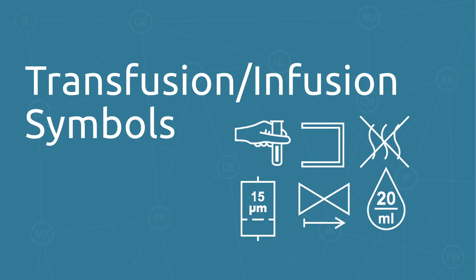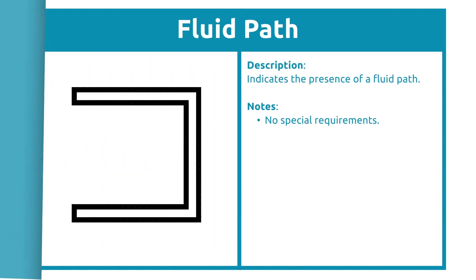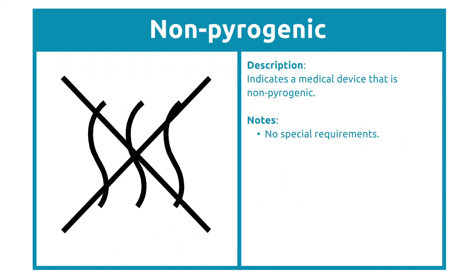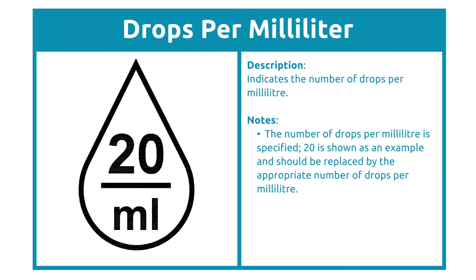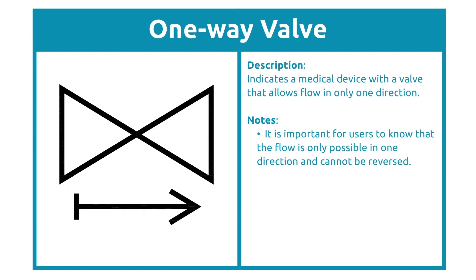Transfusion and infusion symbols are used on devices involved in transporting fluids from one place to another. The sampling site symbol communicates devices used in collecting and/or storing blood samples. The fluid path symbol identifies the flow path of fluids and can be used with other symbols to communicate more meaningful information, such as nonpyrogenic fluid path. The nonpyrogenic symbol informs that the device will not cause inflammation or induce a fever. The drops per milliliter symbol provides information on drop distribution — for example, 20 drops per milliliter, or 50 if the device distributes that amount. Another symbol communicates the filter size in micrometers; for example, a filter pore size of 15 micrometers. The one-way valve symbol informs users that the device is designed to allow fluid flow in only one direction.